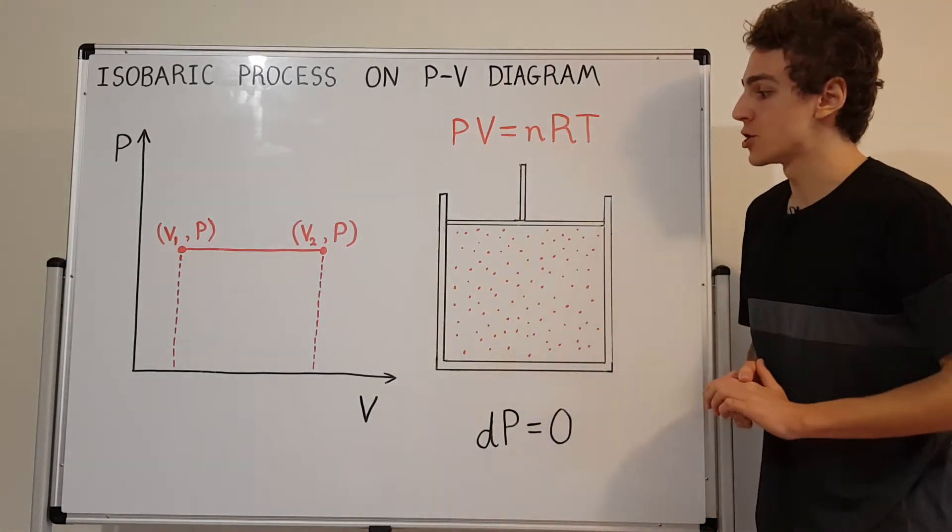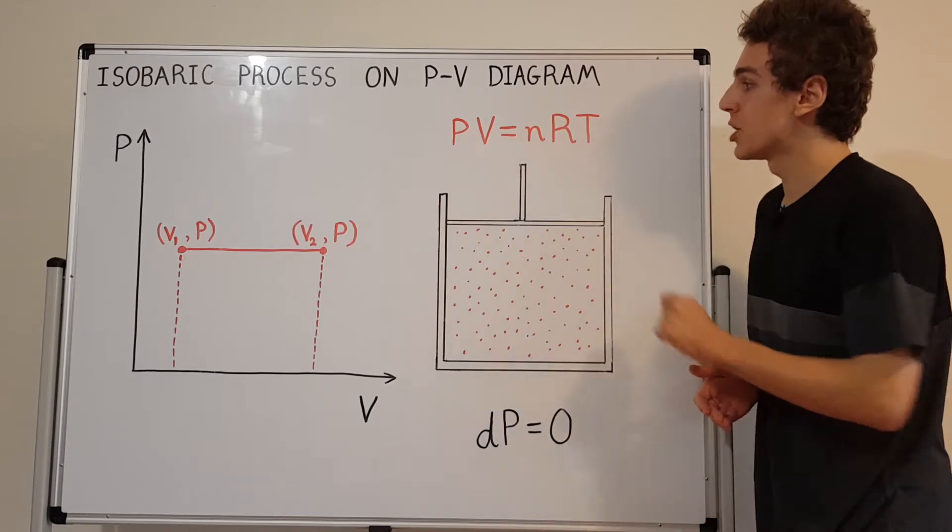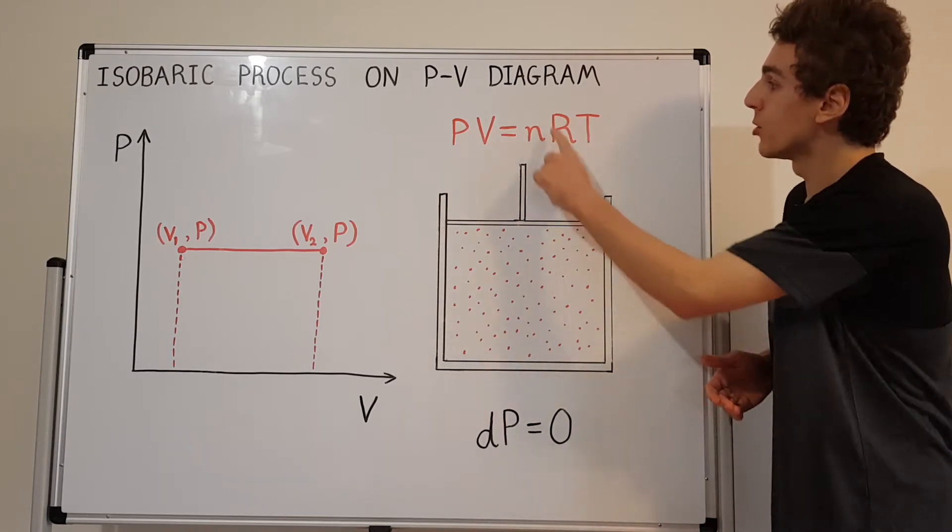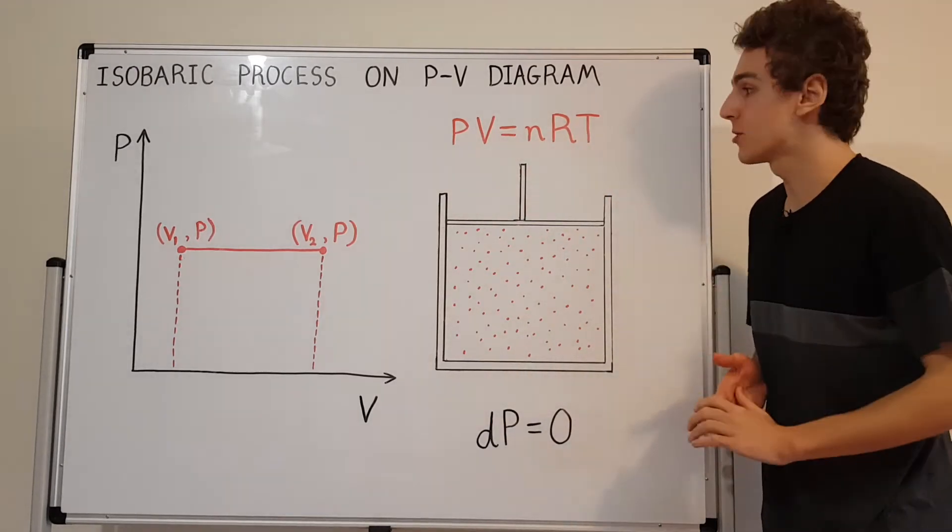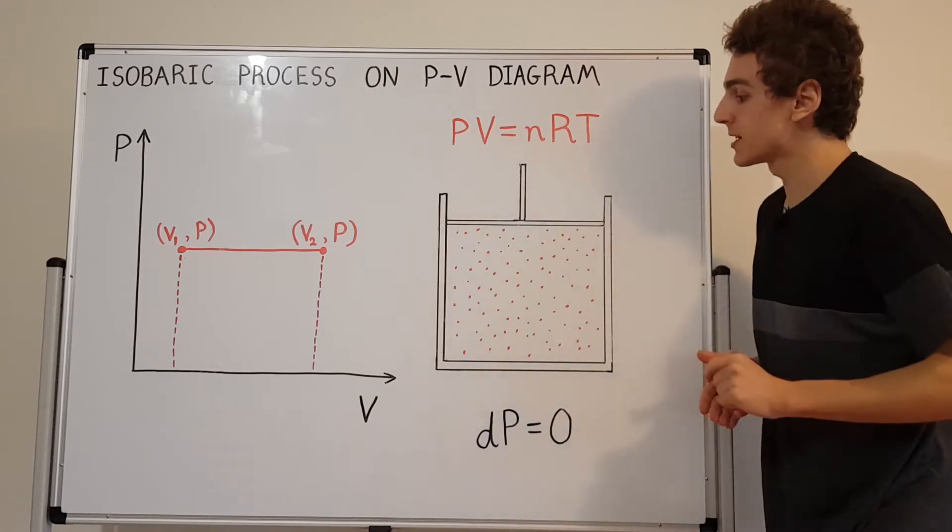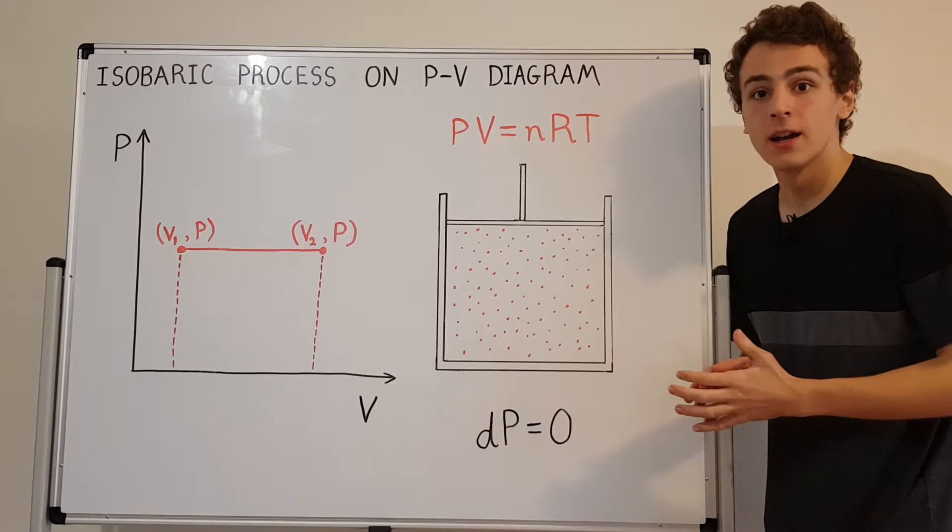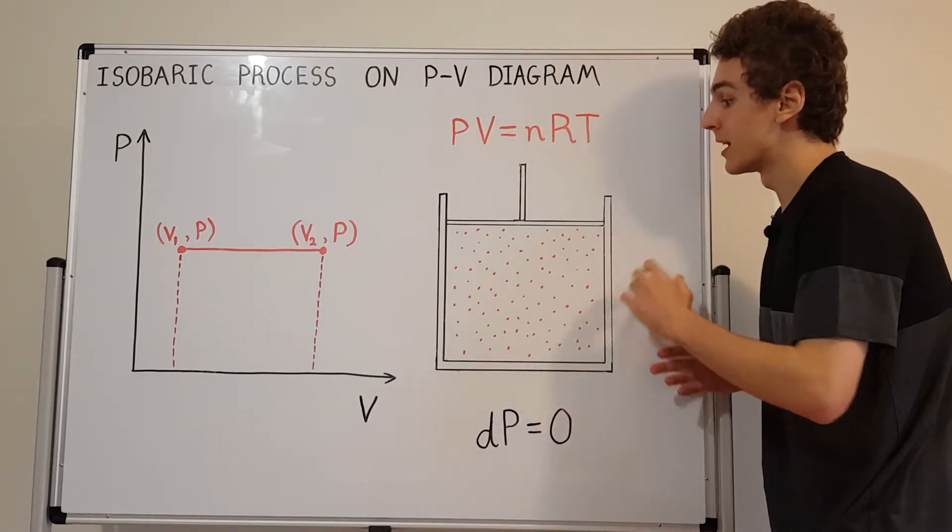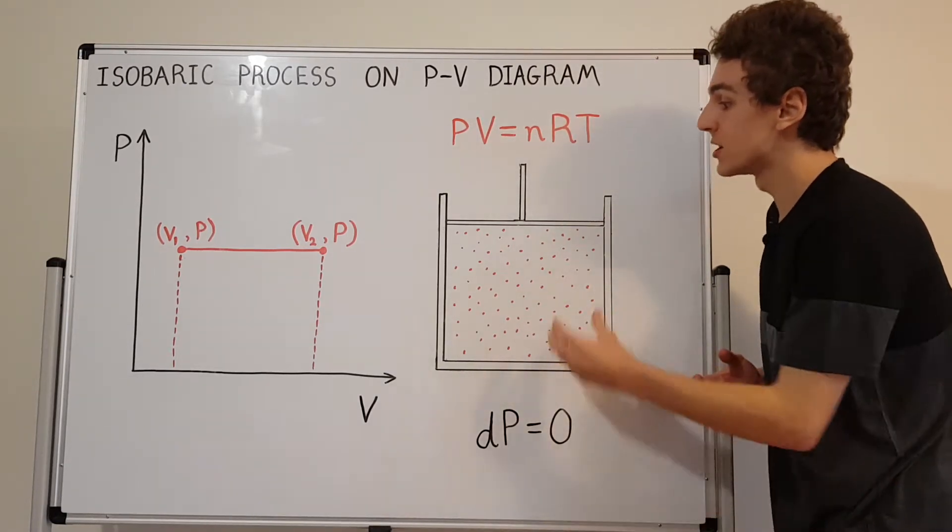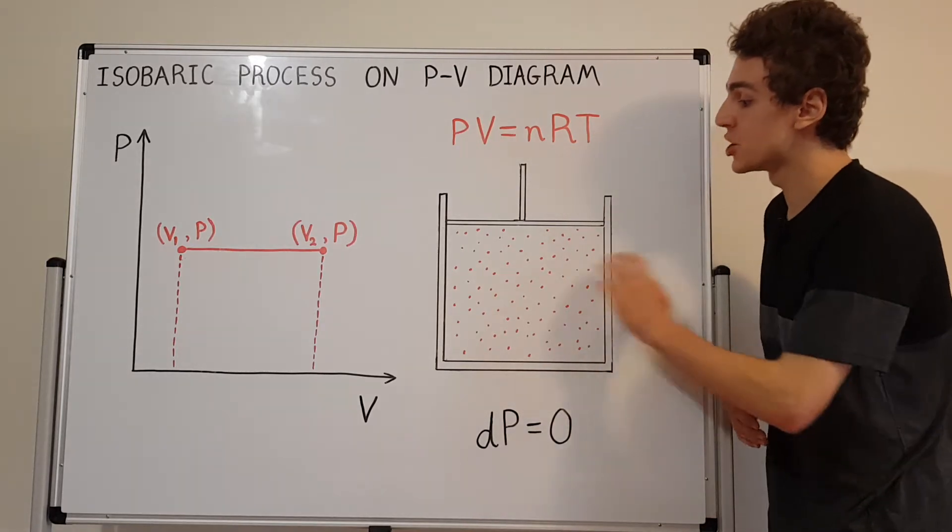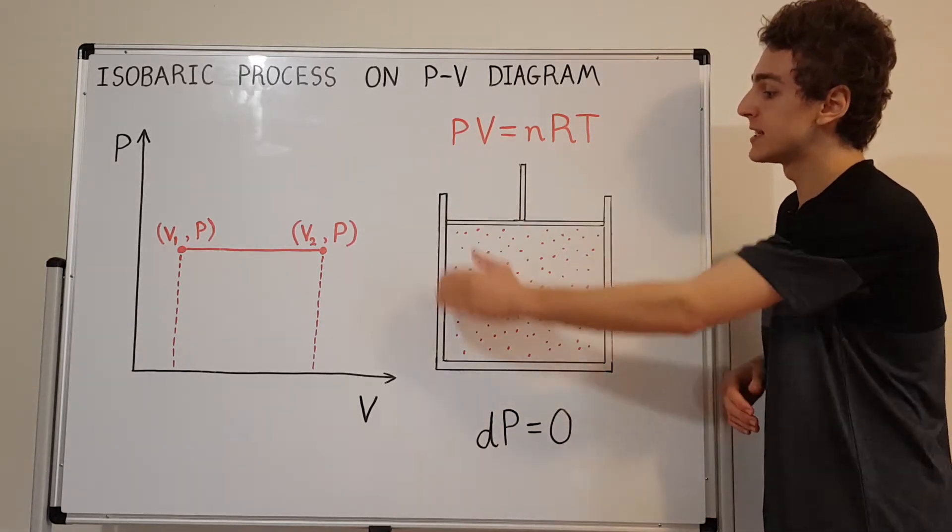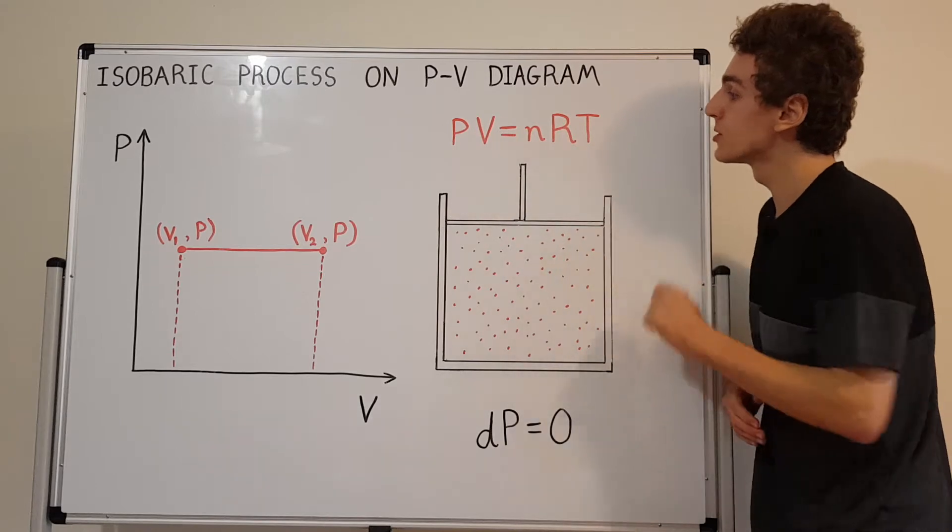What can change? Volume is allowed to change, and temperature is allowed to change. The constant R won't change. n is also fixed because it's a closed container. A closed container can't release or allow any matter to enter. No matter can be exchanged with the surroundings, so the number of moles is constant.